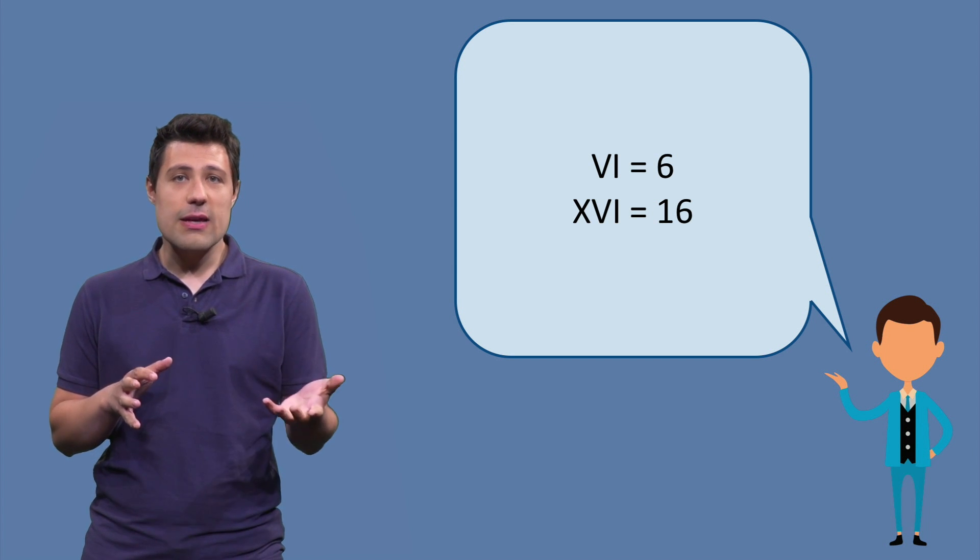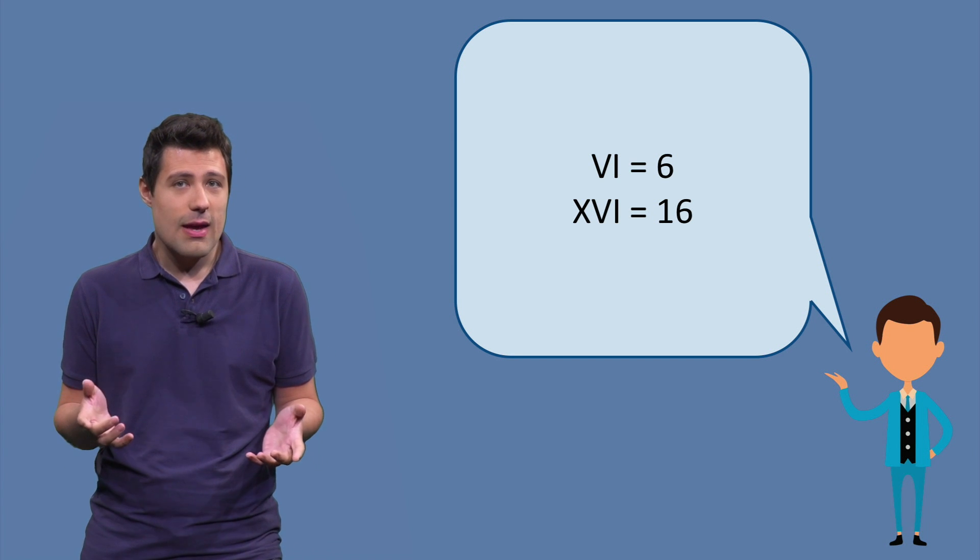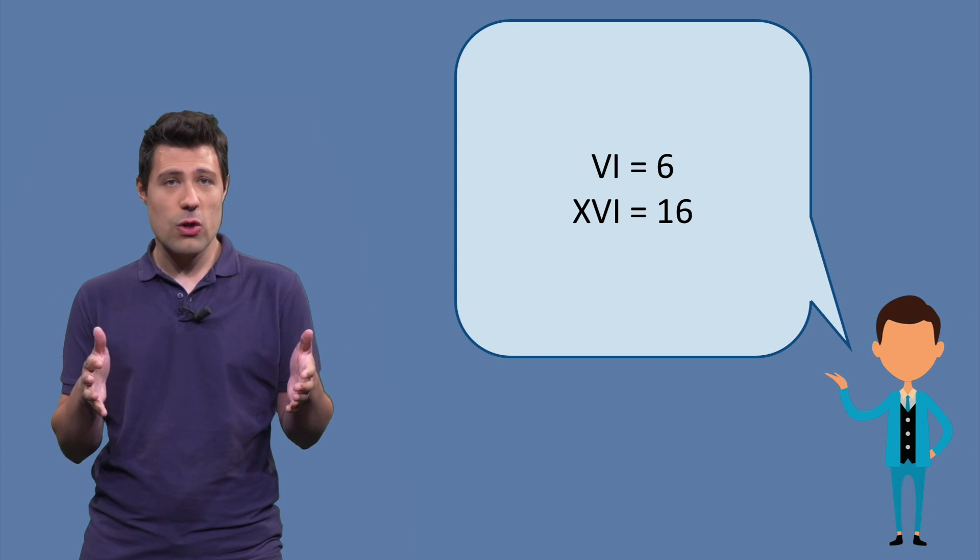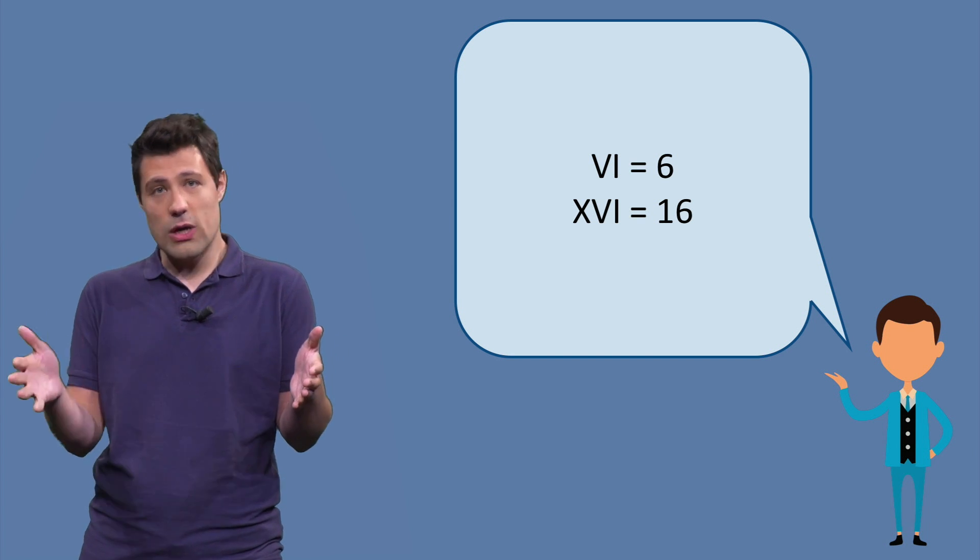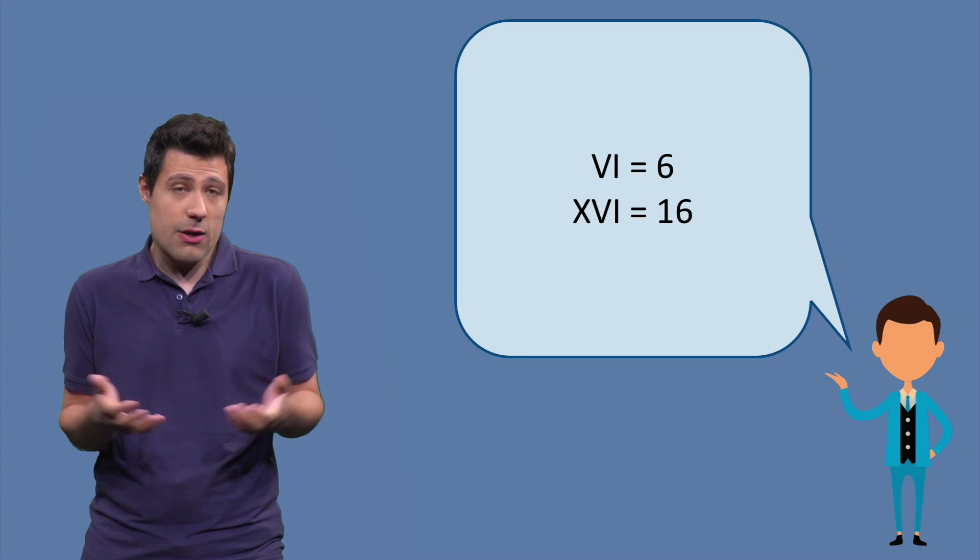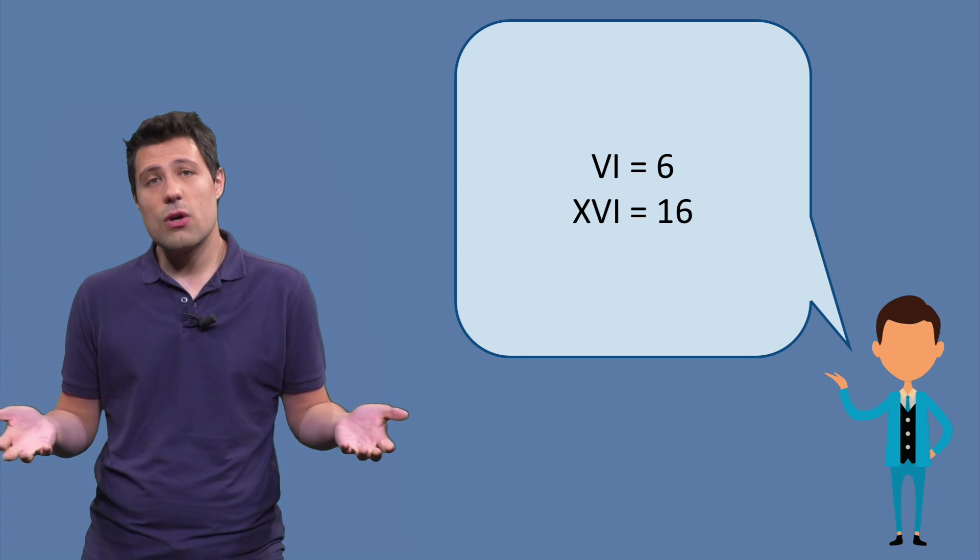And you can compose the numbers by simply putting letters together. For example, VI is 6, XVI is 16, etc. And notice that you should do this starting from the largest number to the smallest number. So V is 5, I is 1, the final number is 6. Another example, X is 10, V is 5, I is 1, so 16.